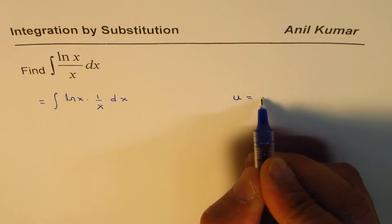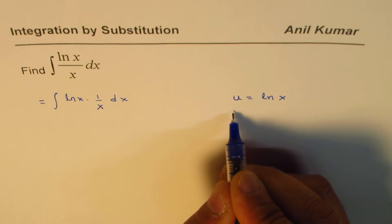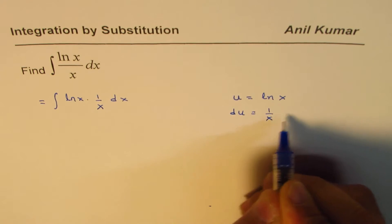So, let us substitute u equals ln x. In that case, du will be 1 over x dx.